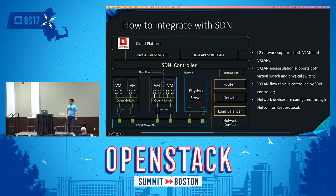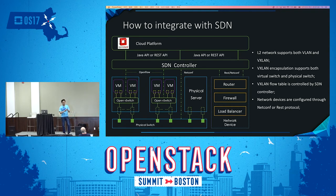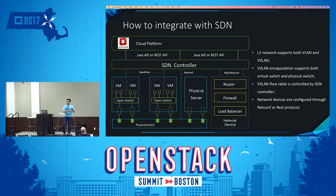Next is the SDN solution. This is a very big cloud — in the past, if you wanted to isolate networks for different tenant users, VLAN was the best solution. But VLAN only supports 4096 network IDs. As the cloud scale expands quickly, you need to extend the number of logical networks. Here we adopt VXLAN — we also have GRE and some other options, but we chose VXLAN.